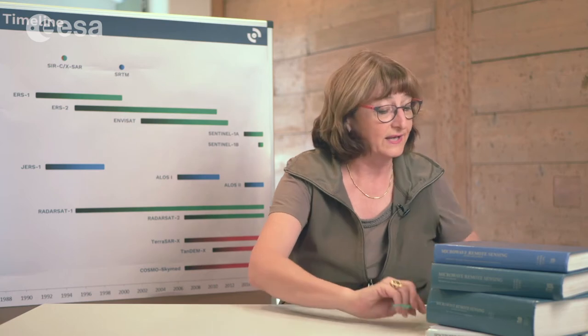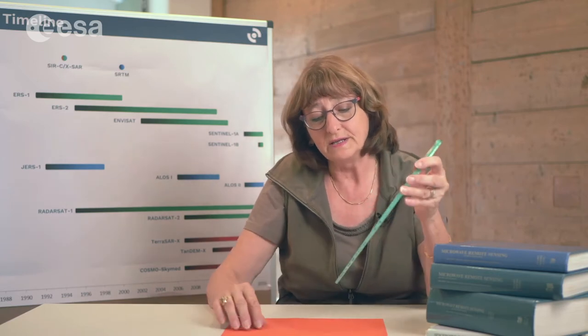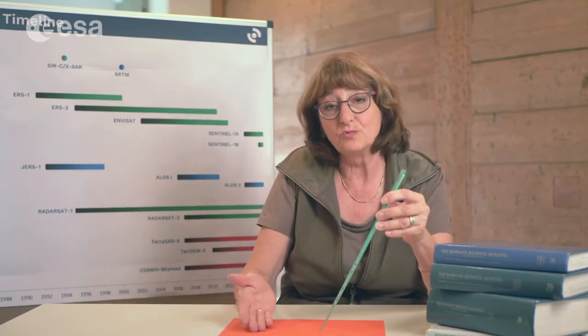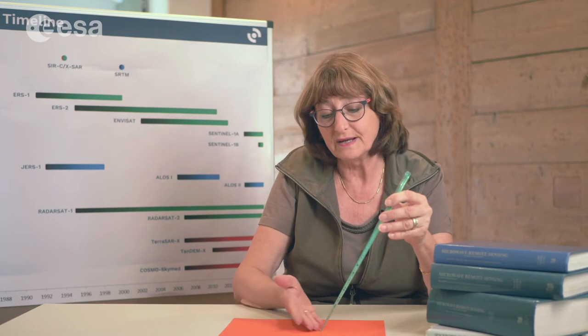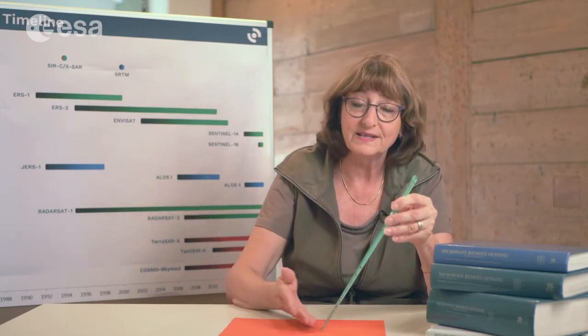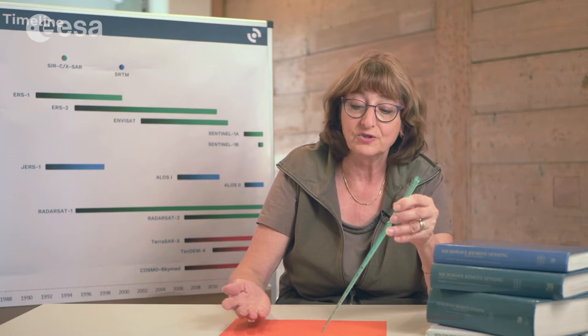Let's put the book aside and think: we have a flat terrain and this flat terrain is a smooth surface. We have our incoming radar wave. Now what happens if it is smooth like a mirror? It mirrors away the signals — what we call specular reflection.